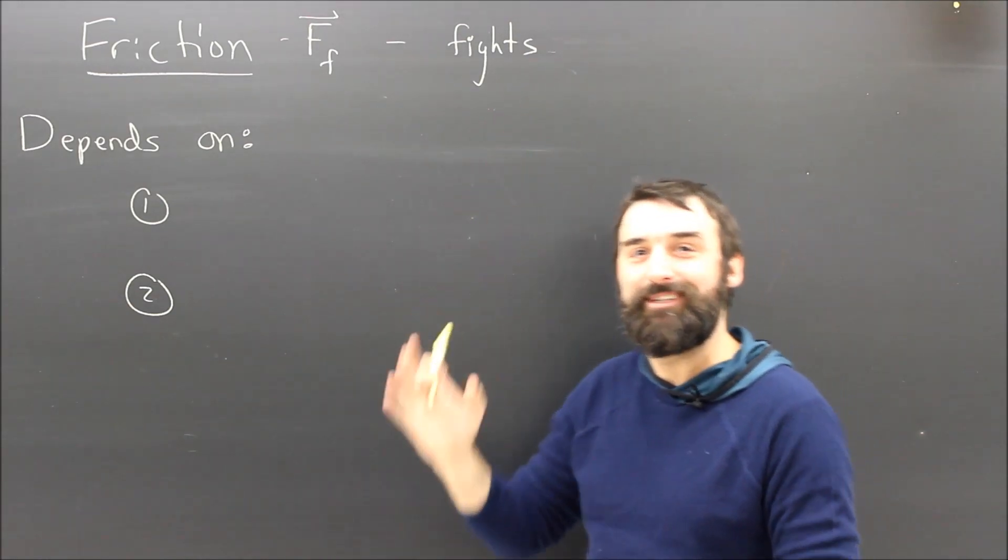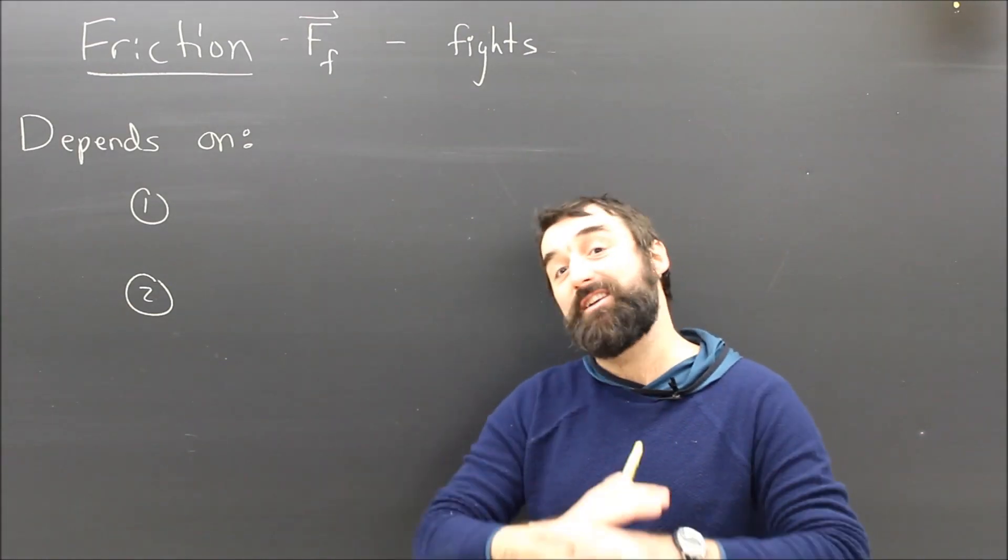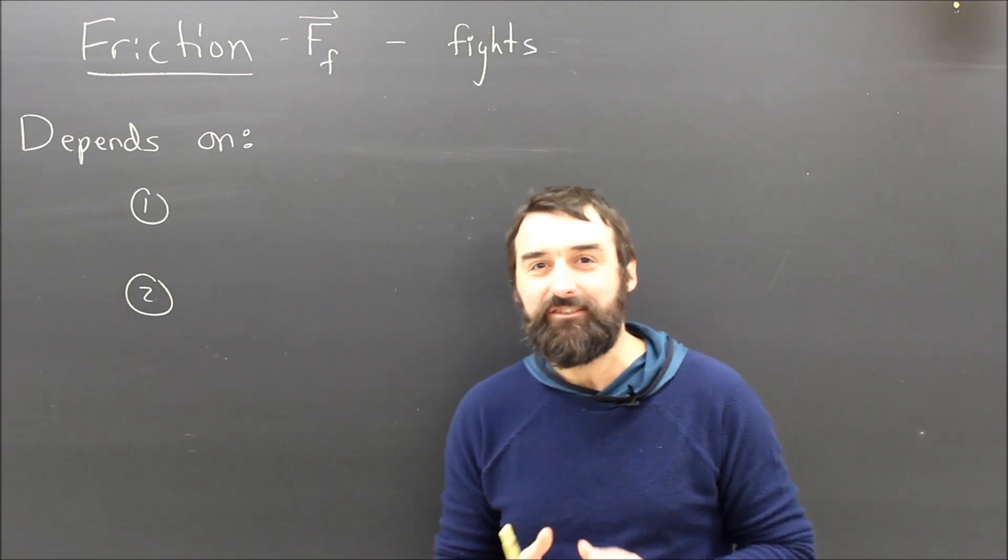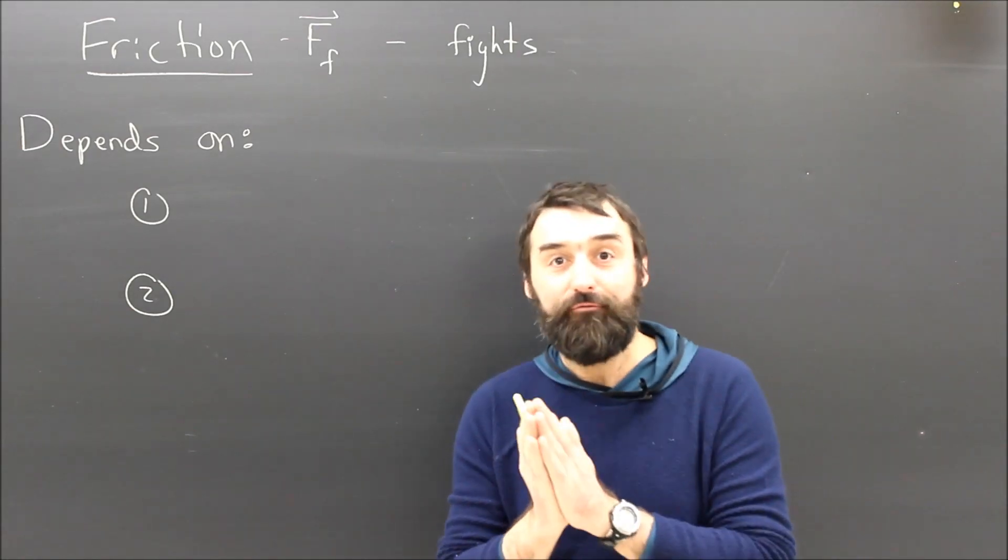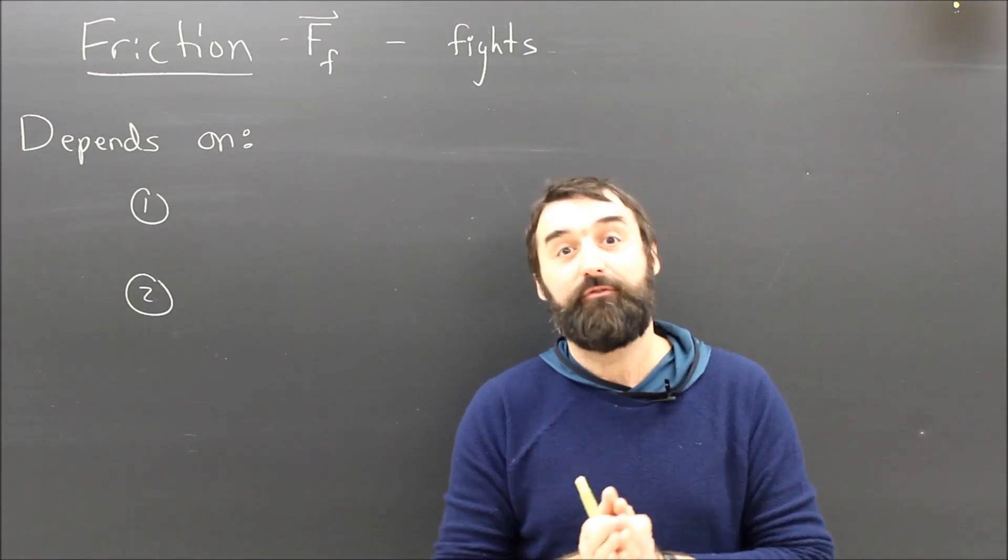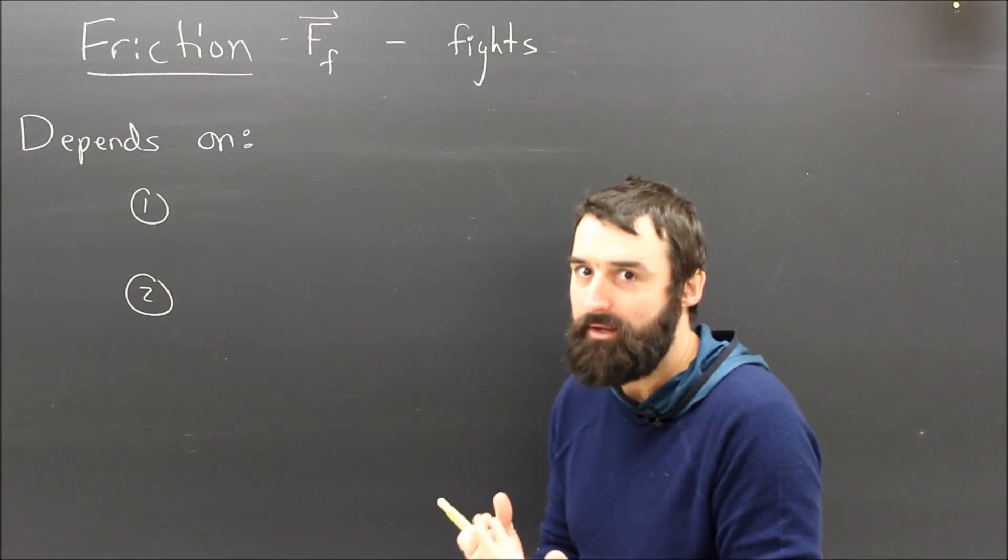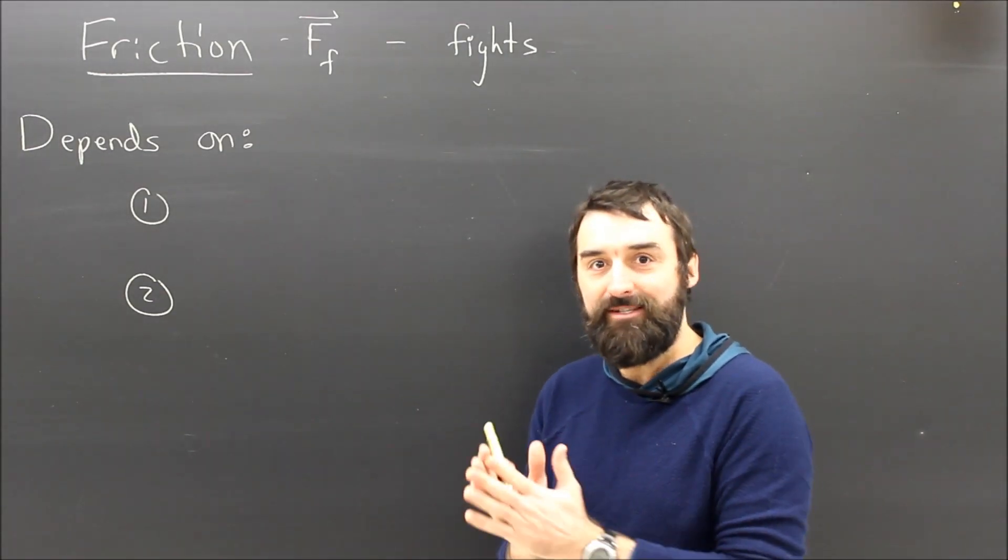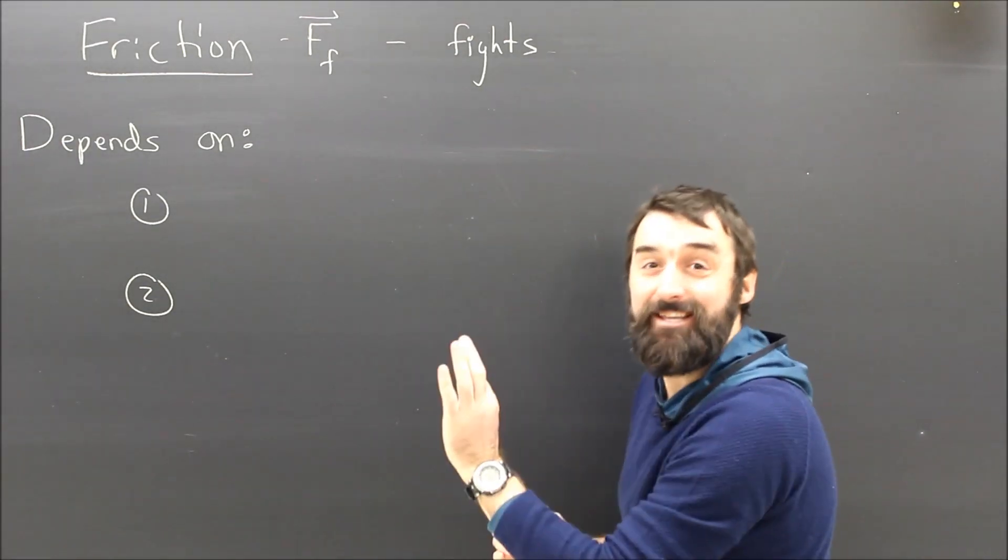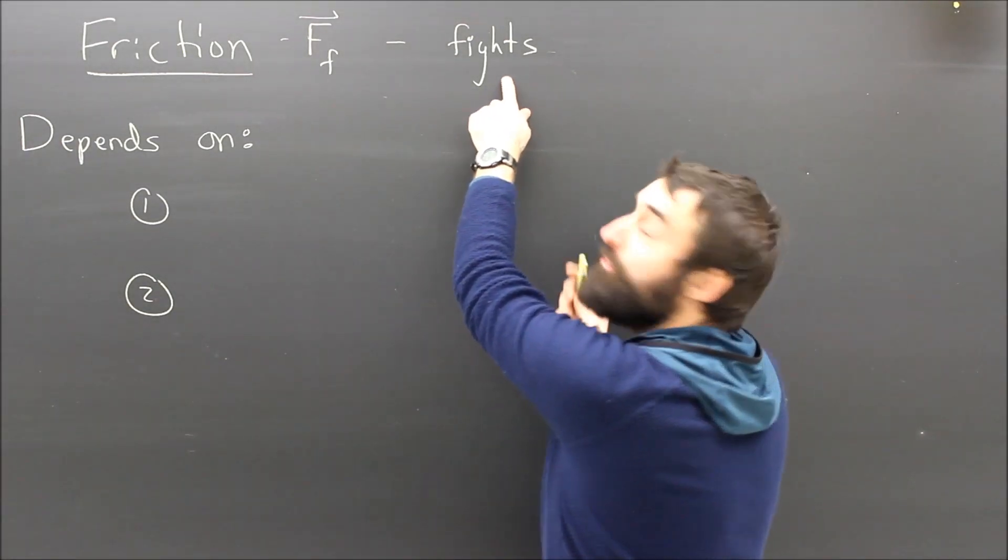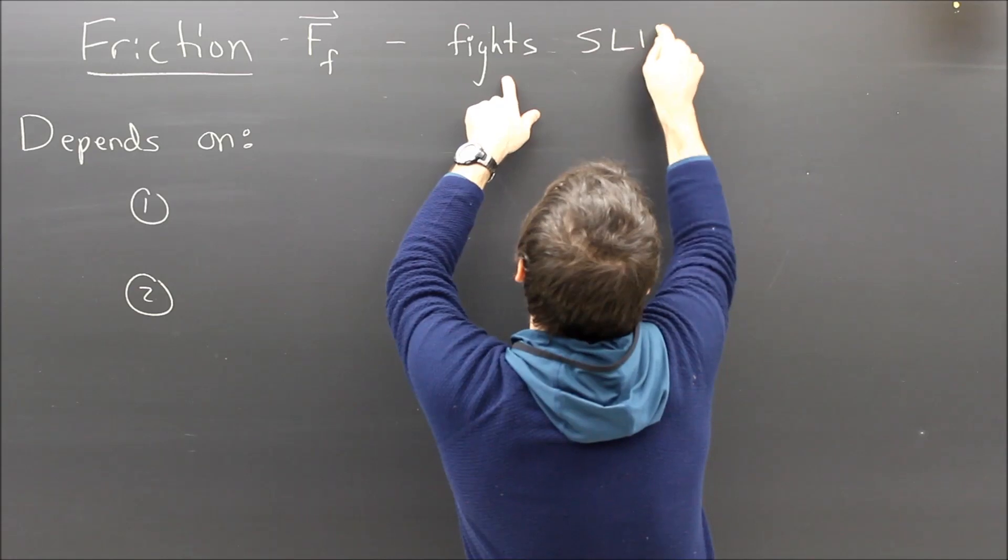But what does friction do? Because a lot of people think that friction tries to stop things from moving and that's not really true. If you're going to get friction right, if you're going to draw it properly on free body diagrams, you have to understand its motivation. And what friction really wants above all things is things not to slip. It's trying to fight, not motion, but it's trying to fight slippage.